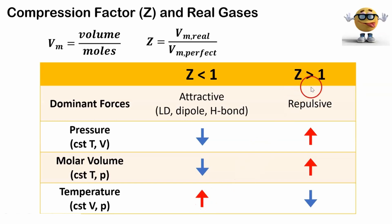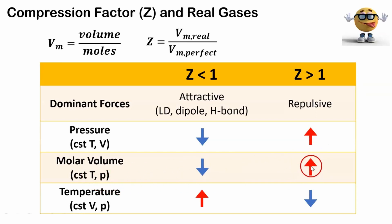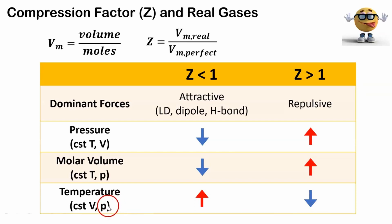If Z is greater than one, repulsive forces are dominant and it'll have a greater pressure than a perfect gas under constant temperature and volume. Under constant temperature and pressure, the molar volume will be greater — removing the pin, the volume goes up. In the third scenario with constant volume and pressure, the temperature of the real gas has to be lower to maintain the same pressure, because we need to slow those molecules down — they repel each other and have a tendency to collide with the container more often compared to a perfect gas.